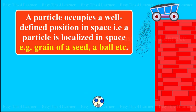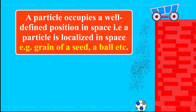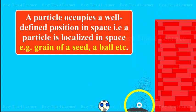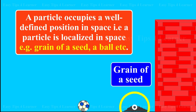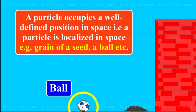Particle. A particle occupies a well-defined position in space. That is, a particle is localized in space. Example: grain of a seed, ball, etc.